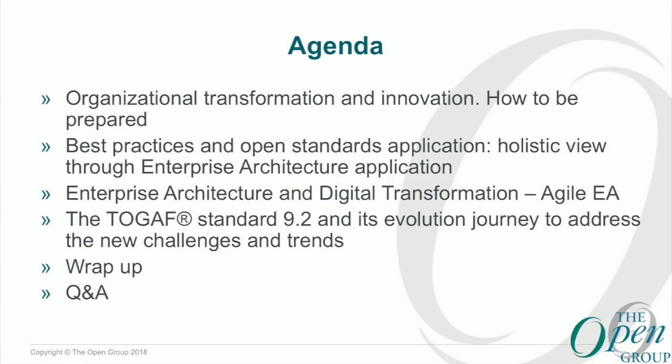This is the agenda. First we'll talk about operational transformation and innovation and how we need to be prepared for that. Best practices and open standards. I'm going to refer to the practice, not only the standard. Then enterprise architecture, digital transformation, agile — how to deliver an agile EA. Then we'll go into the TOGAF standard, what's new in the 9.2 version, especially the evolution of the standard, which is the main point, then some Q&A.